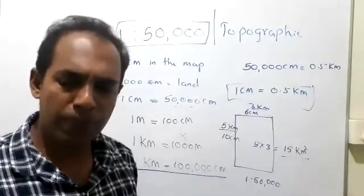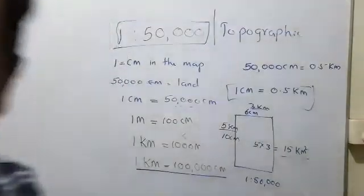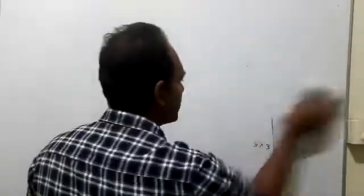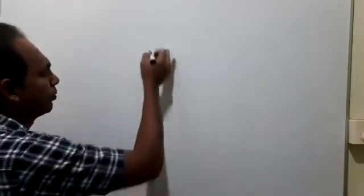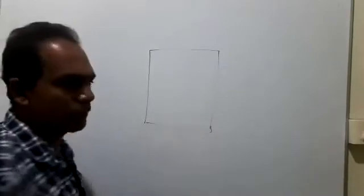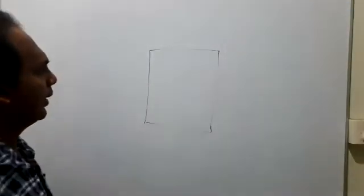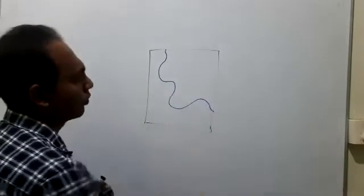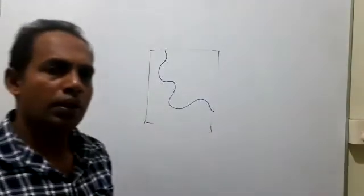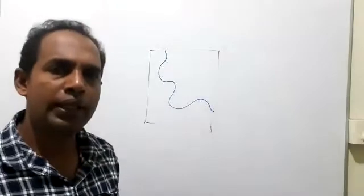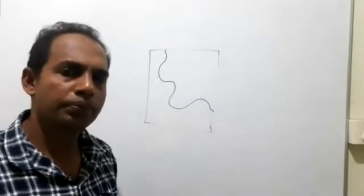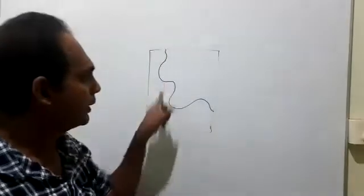Another use of this scale — think that this is another map drawn to a 1 to 50,000 scale with a river flowing across it. If you want to measure the distance of the river, you cannot use a ruler because the ruler is straight but the river is an irregular shape.